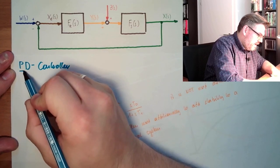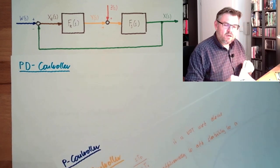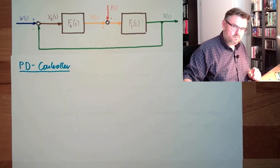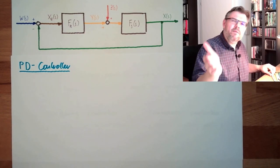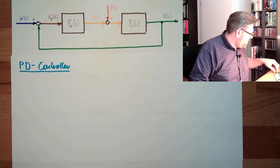And again, the PD-controller is something which is parallelizing. The two elements are parallel. So again, we have the two parallel elements.